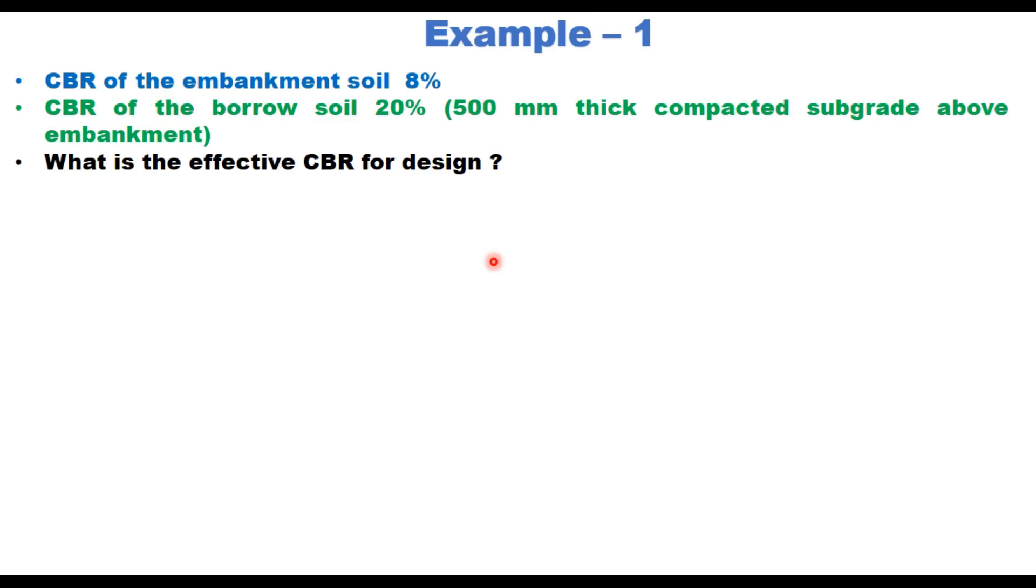Now let us take one example just to illustrate the procedure of finding effective CBR. Let us say CBR of the embankment soil is 8 percent and CBR of the borrow material which is used to prepare 500 millimeter thick compacted subgrade above embankment is 20 percent. So what is the effective CBR for the design?